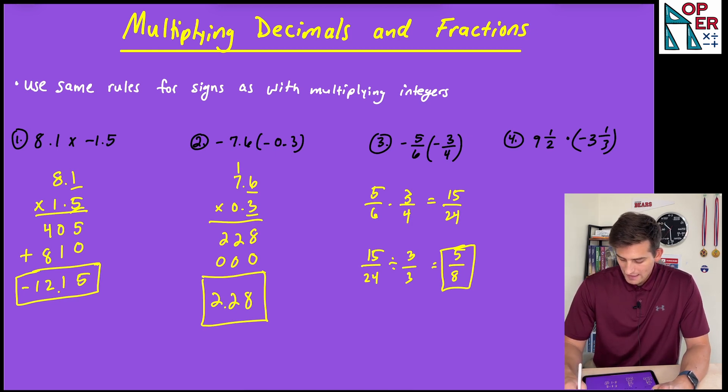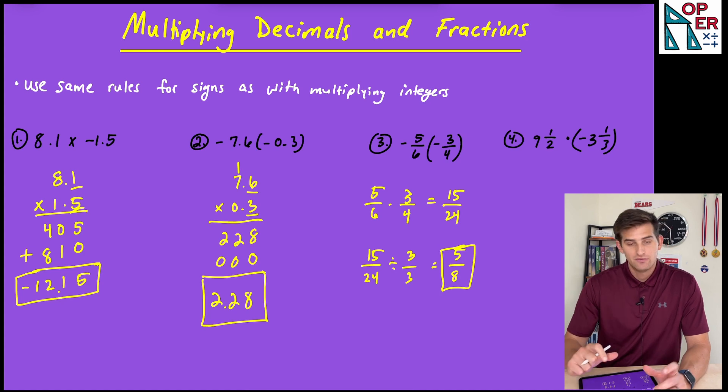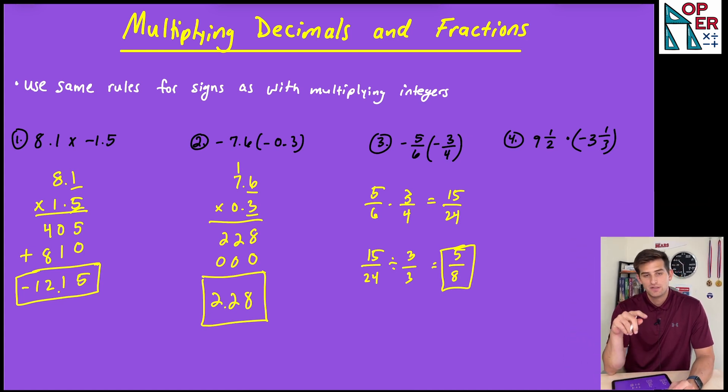And number four, 9 and a half times negative 3 and a third. So our answer is going to be negative this time because we're multiplying a positive by a negative. Let's go ahead and rewrite both of these as improper fractions. So remember to do that, we do like that backward C, denominator times whole number plus numerator. So 9 times 2 is 18 plus 1 would be 19. We keep the same denominator, so 19 over 2. And then we would do 3 times 3, which is 9. 9 plus 1, which is 10. So we would have 10 over 3 for negative 3 and a third. And I'm just writing that as positive right now. We'll make sure our answer is negative when we're done.